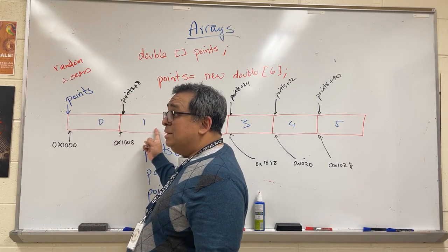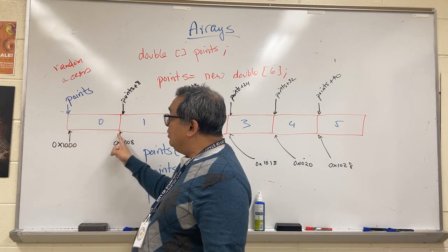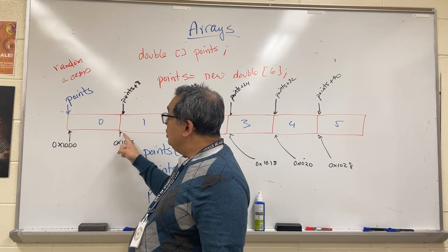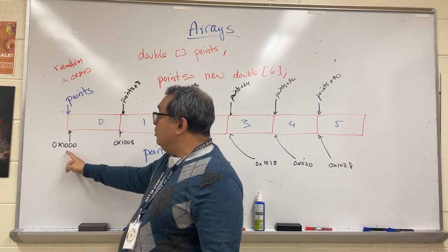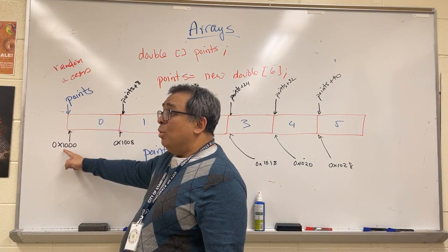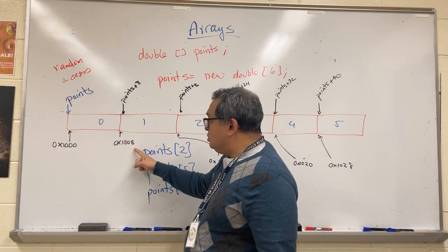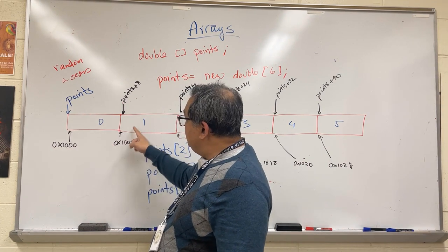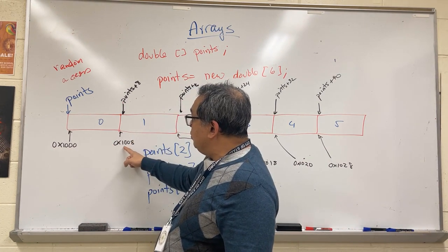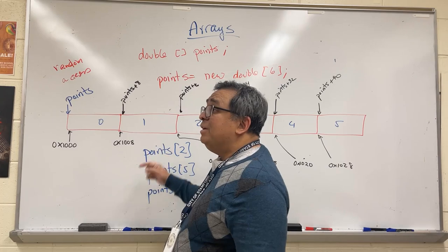So that means that the next element is eight locations after the first element. Item zero occupies locations from 1000 to 1007, and then this next one would occupy locations 1008 through 100F.